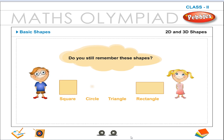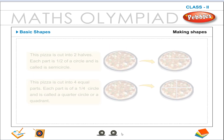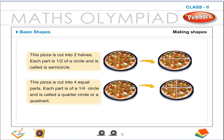Do you still remember these shapes? This pizza is cut into two halves. Each part is half of a circle and is called a semicircle. This pizza is cut into four equal parts. Each part is a quarter circle and it is called a quarter circle or a quadrant.